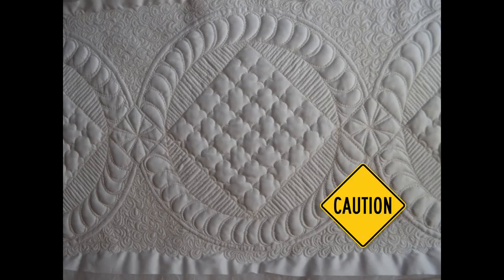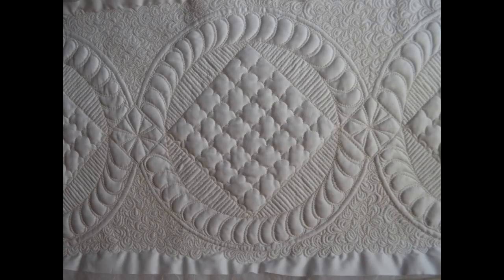Before I forget, I just wanted to give you a little caution on the Scullet Clamshells. It is a one-way design, so make sure that you do each one exactly the same. So in other words, if you're stitching on the left-hand side of the line, stay on the left-hand side for each one. If you're stitching on the bottom of the line, stay on the bottom for each one. Otherwise, it will not look as good as you want it to. Ask me how I know.